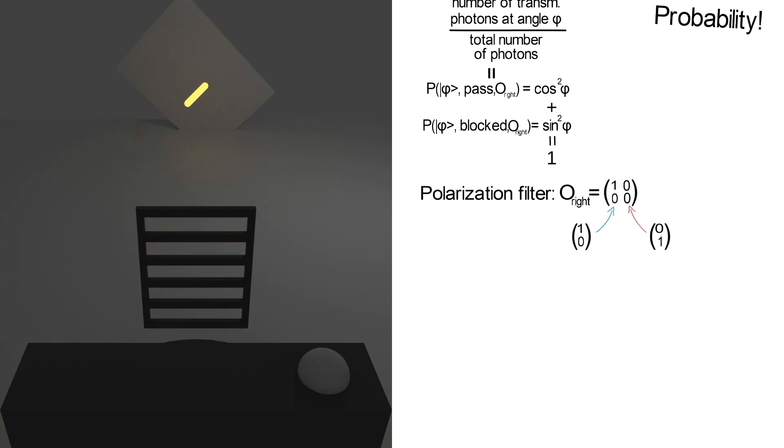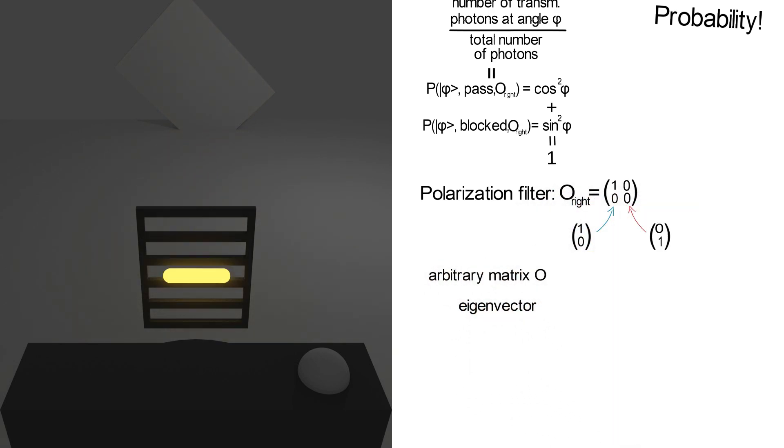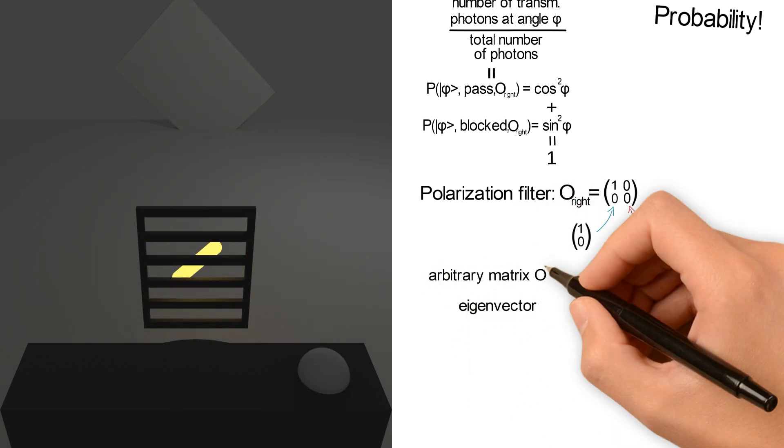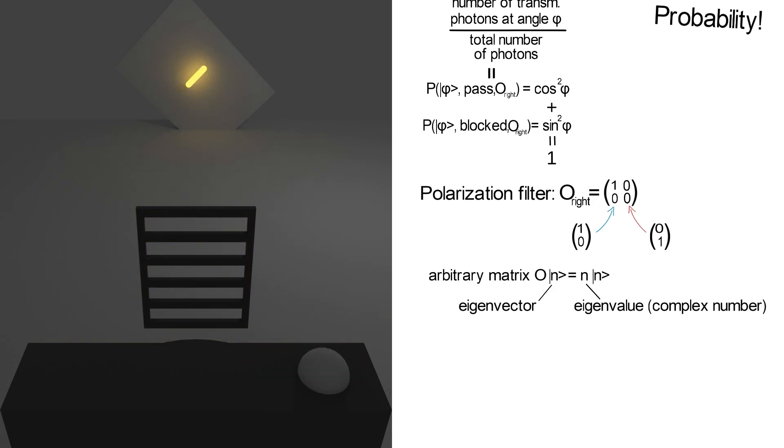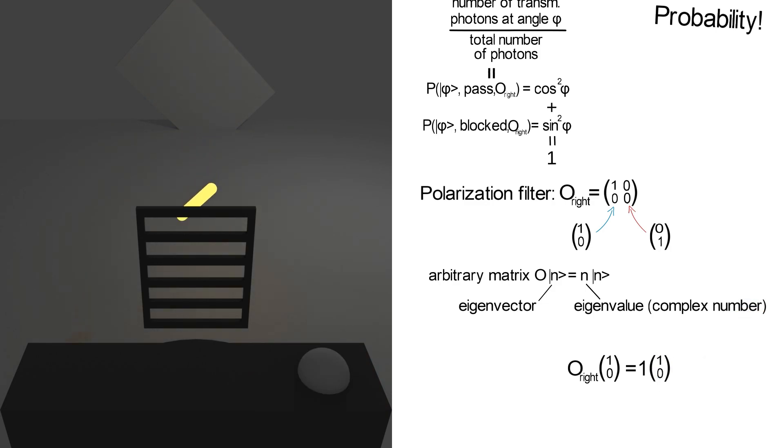For this, we first define an eigenvector of an arbitrary matrix O to be a non-zero normalized vector N, such that O times vector N equals N times vector N, for some number N, also called eigenvalue. So let's take a look at our example. The first eigenvector of O is 1 0 with eigenvalue 1. The second eigenvector is 0 1 with eigenvalue 0. We also name these eigenvectors 1 and 0.